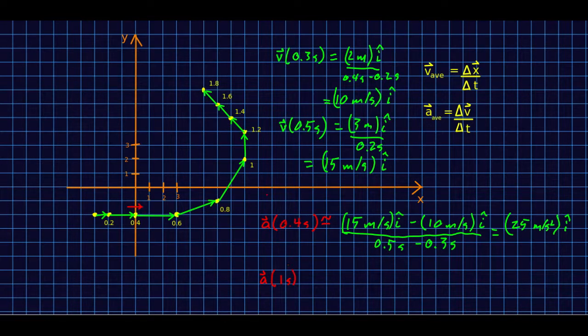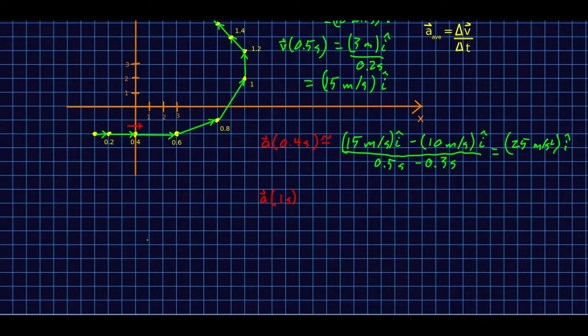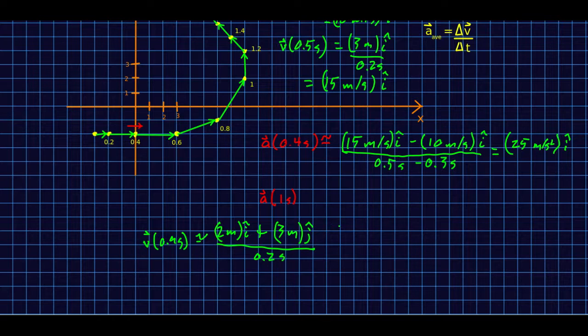Let me now do at one second. So if you look at that, you're going to have a V at 0.9 seconds, which is approximately this V. So look at that. That is 2 meters i-hat plus 3 meters in the positive y direction, all divided by, again, a delta T, which is 1 minus 0.8 seconds, so 0.2 seconds. Okay, and so that is going to be 10 meters per second in the x direction and 15 meters per second in the y direction.